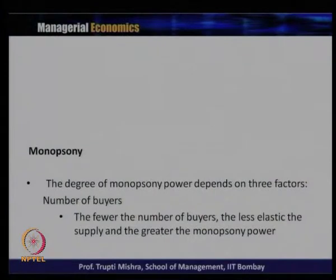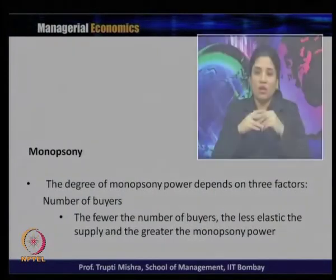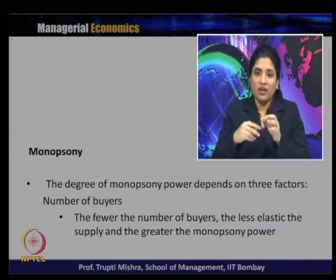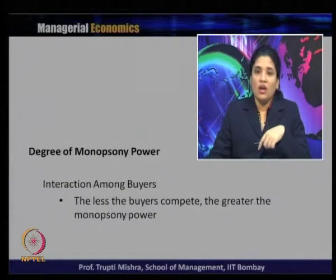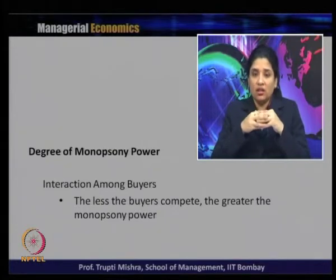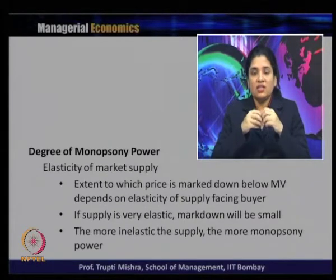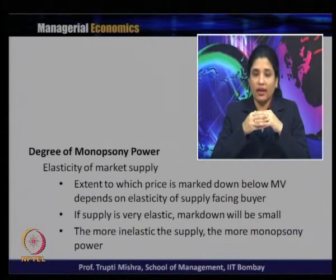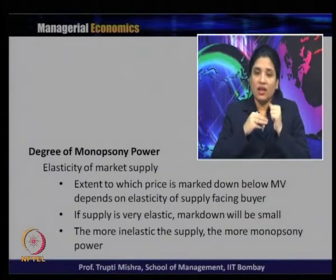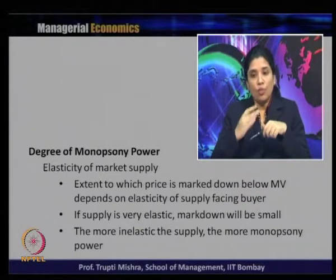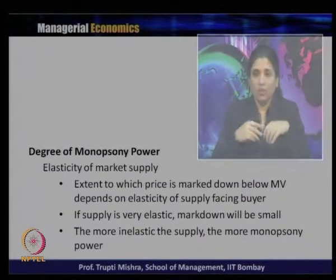The degree of monopsony power depends on three factors. First, the number of buyers: the fewer the buyers, the less elastic the supply and the greater the monopsony power. Second, interaction among buyers: the less buyers compete with each other, the greater the monopsony power. Third, elasticity of market supply: the extent to which the price is marked down below the marginal benefit depends on elasticity of supply. If supply is very elastic, markdown will be small; the more inelastic the supply, the greater the monopsony power.